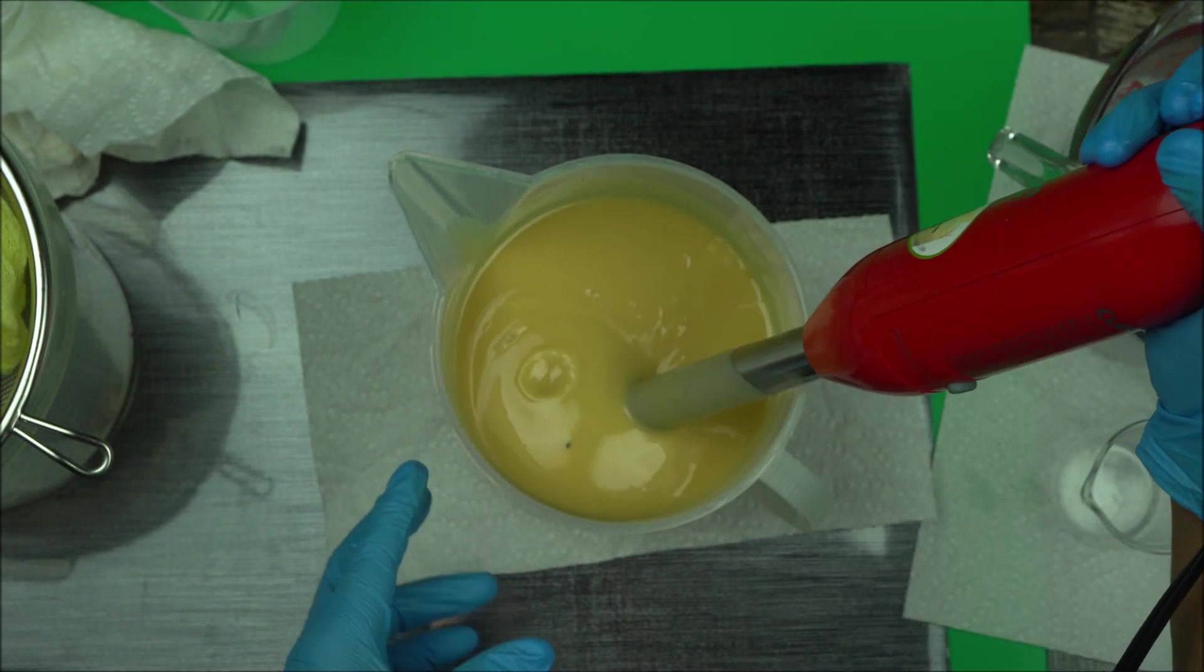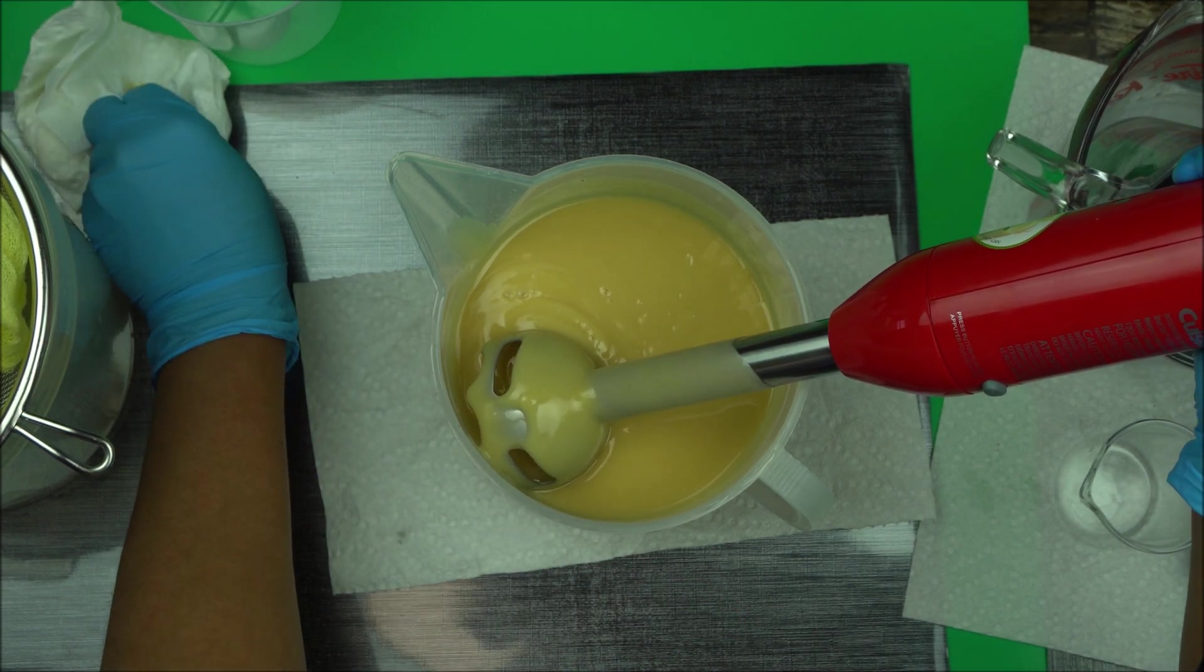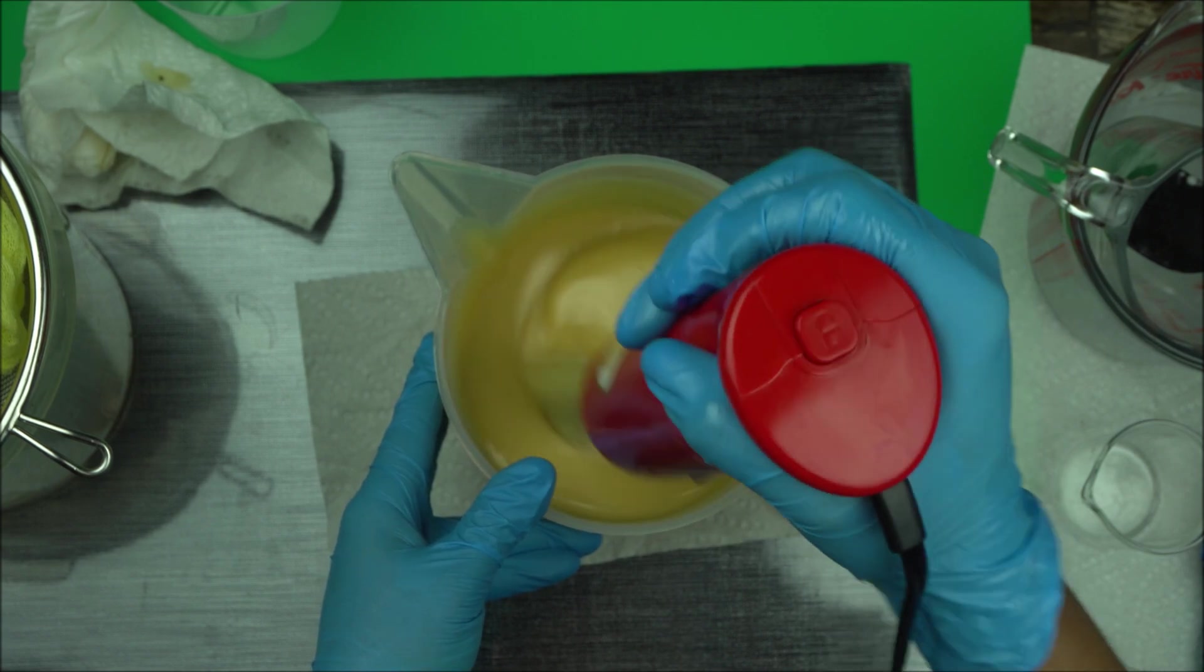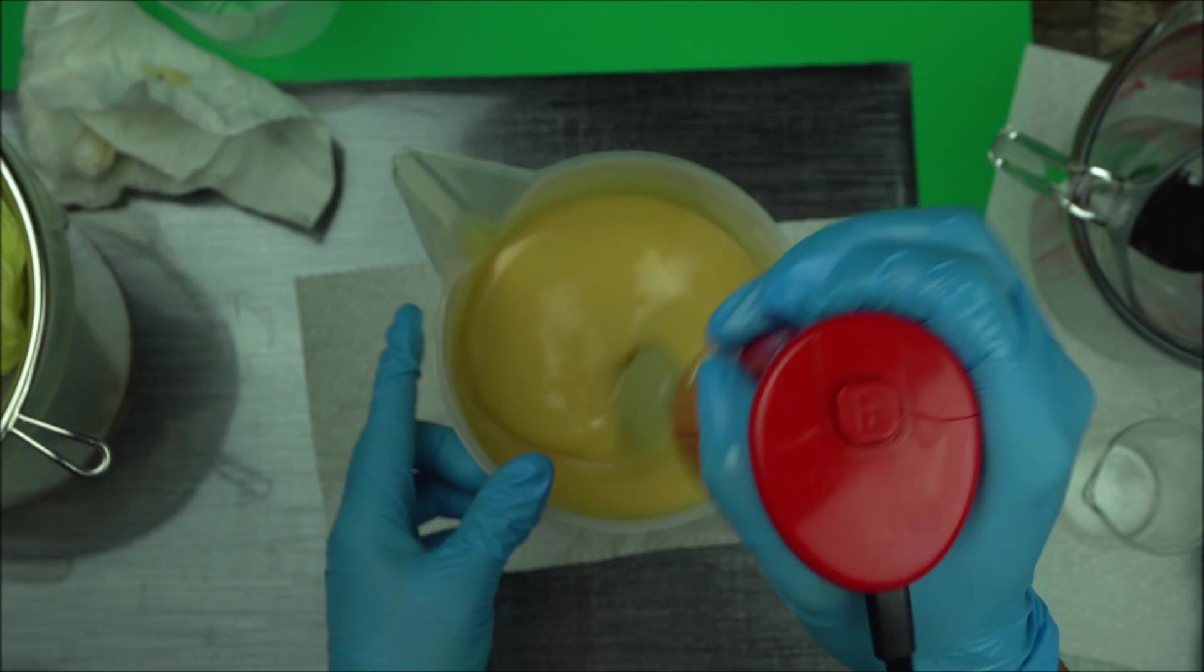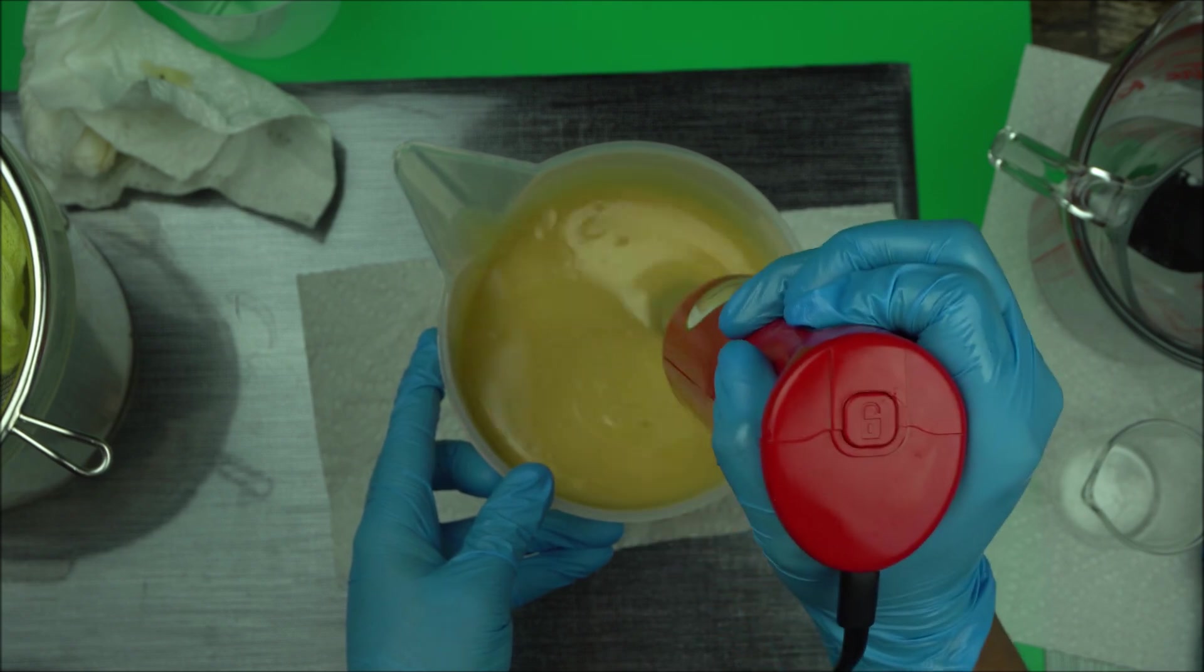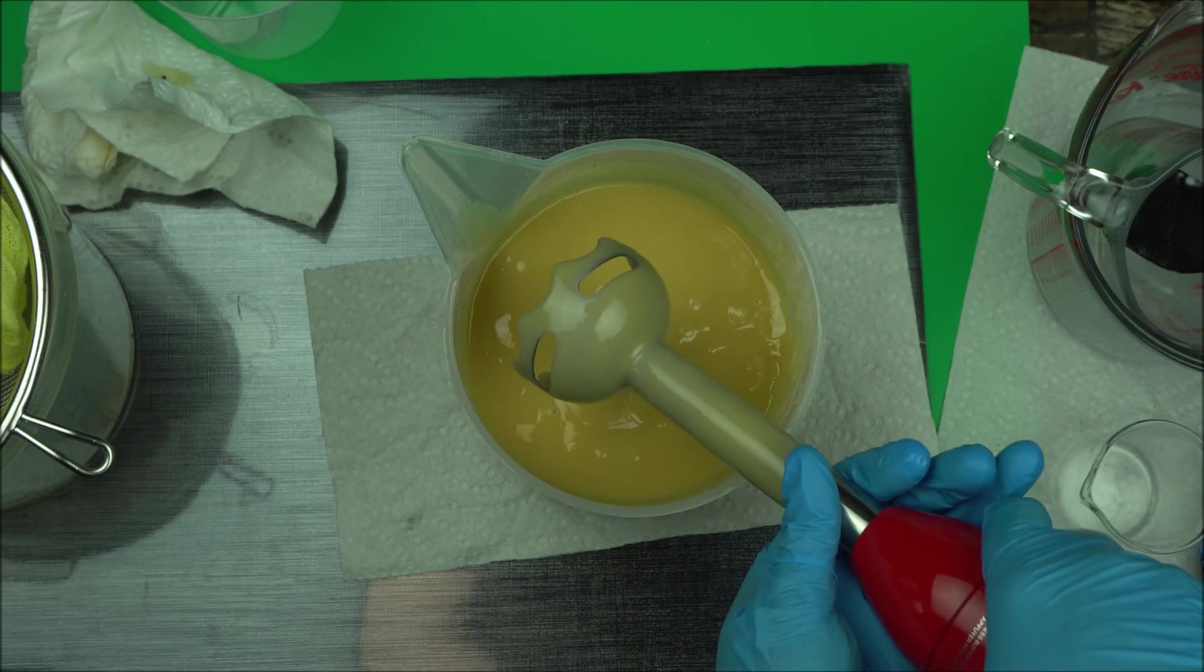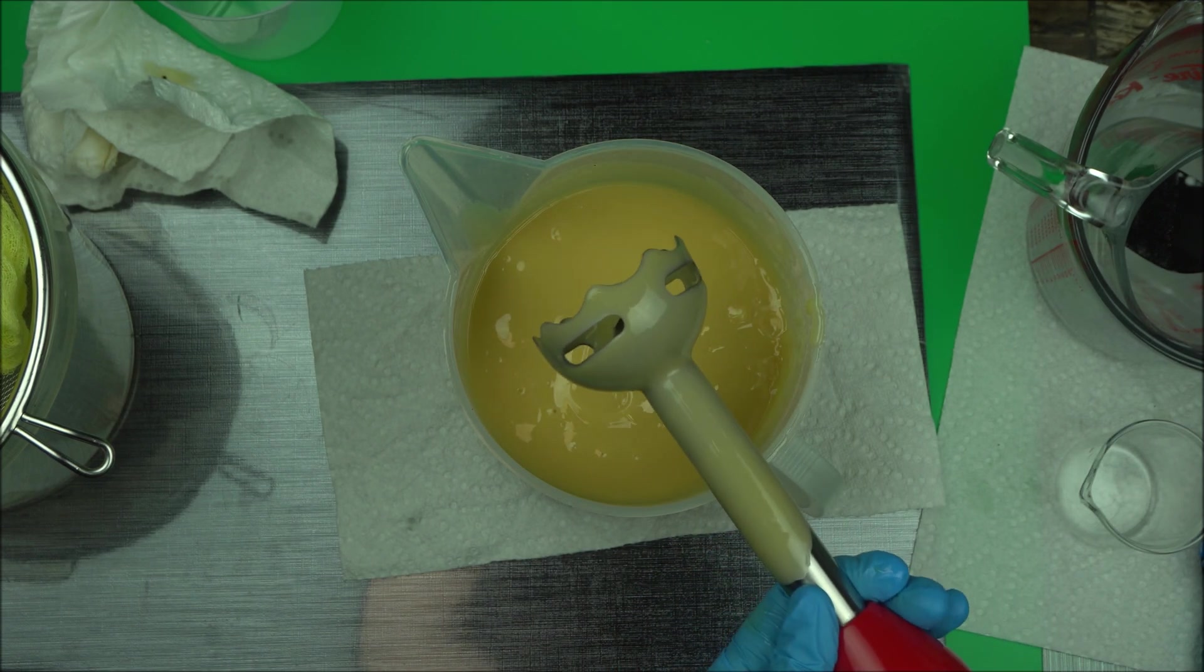We don't need to worry too much about the dirt in it - remember this is just going to be a cleaning soap. You can't use this on your skin - this is to clean the dishes, to clean your kitchen towels and washroom towels. I think we are good now. We have reached the consistency where we are going to stop blending. Make sure you have your mold ready.